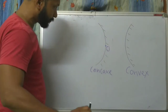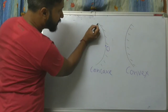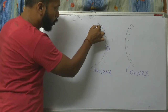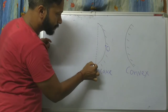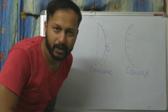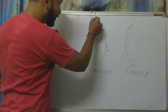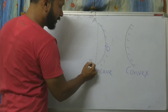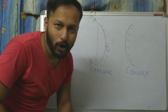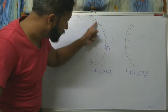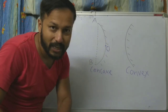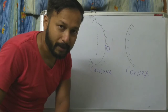Now, from one end of the mirror to the other end, if you draw a straight line, that is called the aperture of the mirror. So A and B mark the aperture — it is an imaginary line across the mirror.